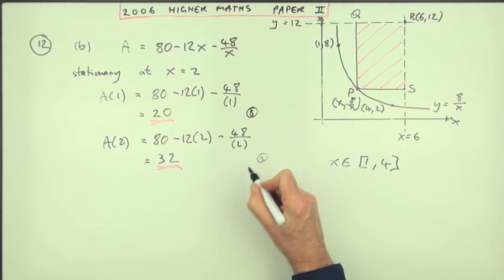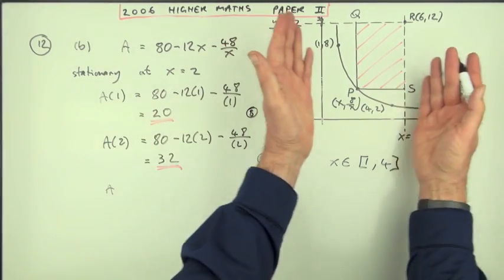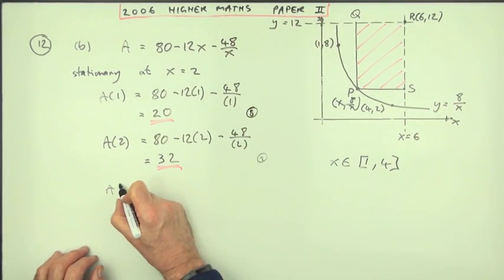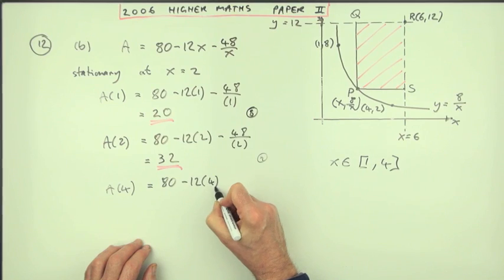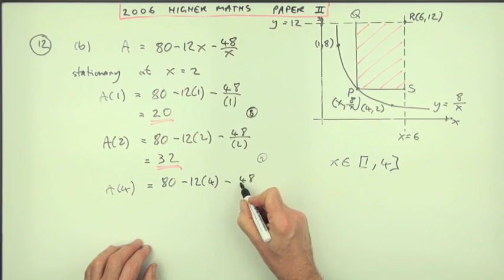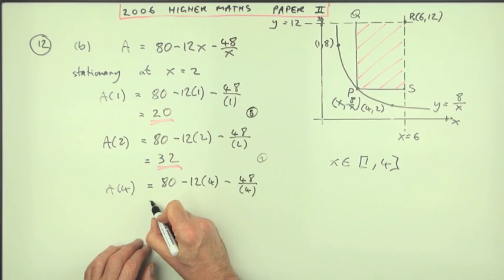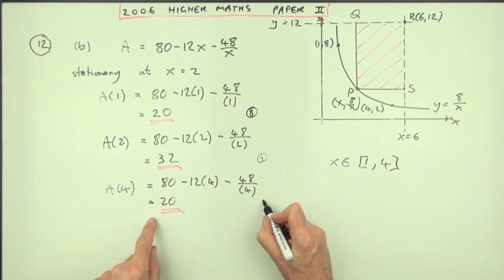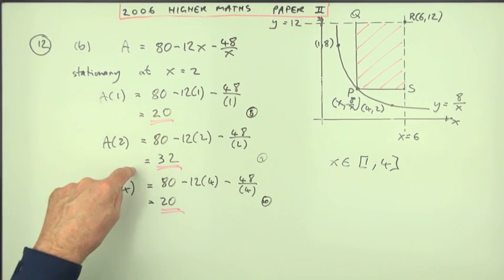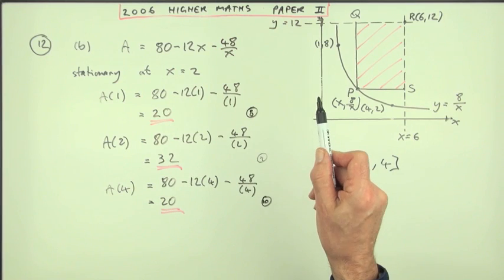Work it out at the other end of this interval. The curtains are drawn in between 1 and 4. What's the answer at 4? Well, that'll be 80 minus 12 times 4 minus 48 over the 4. So that'll be minus 48 minus 12, minus 60, that's a 20 again. Oh, there's a tie here, but nevertheless that's a mark, that's mark number 10. So there's 3 marks just for knowing to evaluate it at those 3 points. But that is important in this question because it's an interval question, not just find the stationary point question.